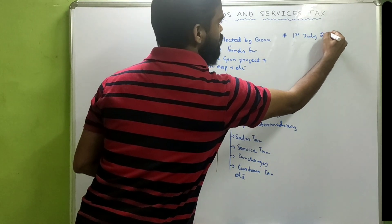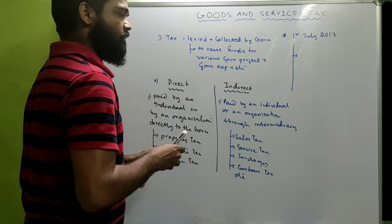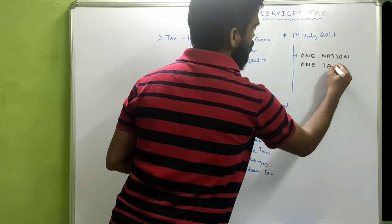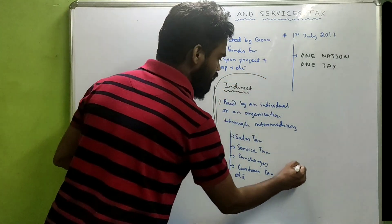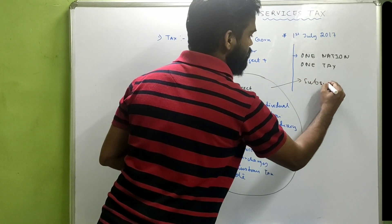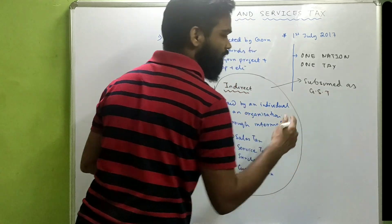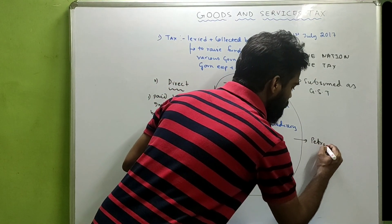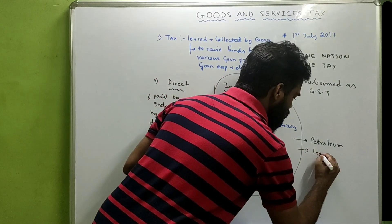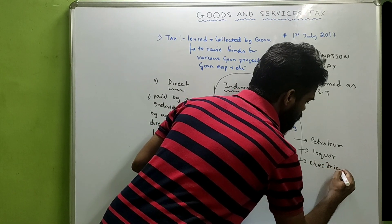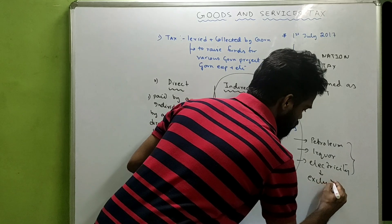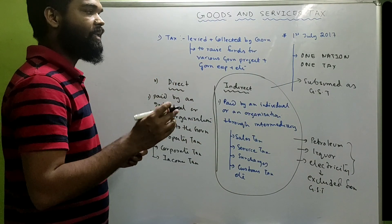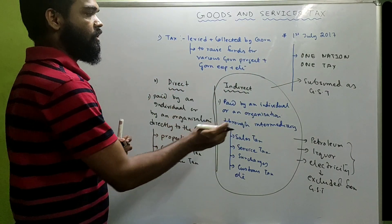On 1st July 2017, the government came up with the idea of 'One Nation, One Tax.' All the indirect taxes were subsumed as GST, barring a few which still pay indirect taxes not included in GST — for example, petroleum products, liquor, and electricity. They are excluded from GST and still follow the previous method of taxation.